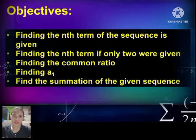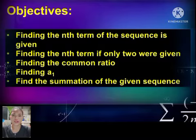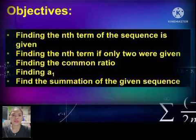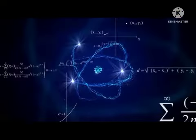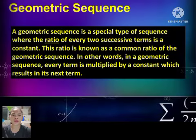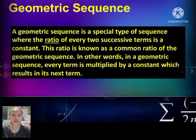In this lesson, we are going to cover: finding the nth term of the sequence when given, finding the nth term if only two terms were given, finding the common ratio, finding a sub 1, and finding the summation of the given sequence — where the ratio of every two successive terms is a constant. This ratio is known as the common ratio of the geometric sequence.